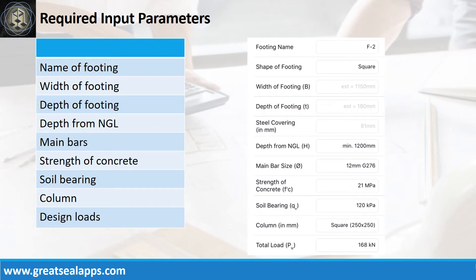Enumerate input parameters required. Footing name: F2. Shape of footing: square. Depth from natural grade line: 1,200 mm. Main bars: 12 mm bar at grade 276. Strength of concrete: 21 MPa. Soil bearing capacity: 120 kPa. Column: 250 mm by 250 mm. Factored actual load: 168 kN.